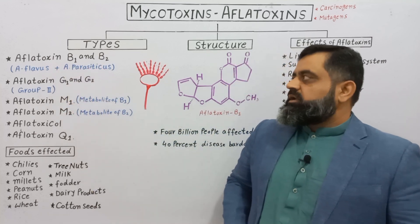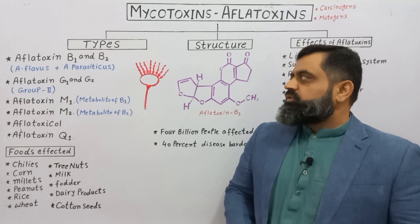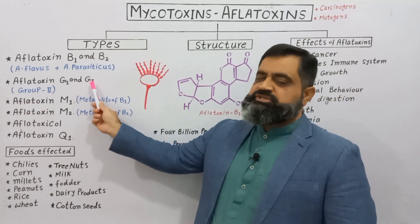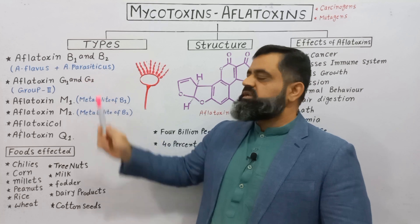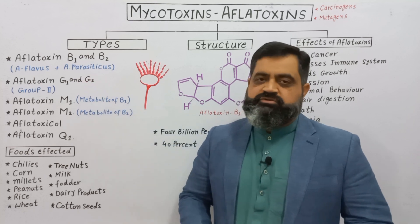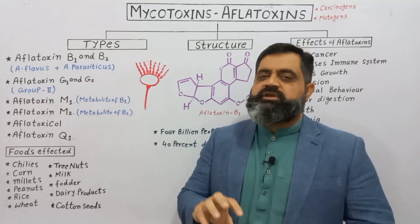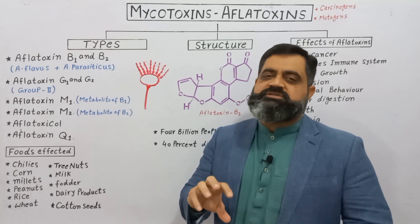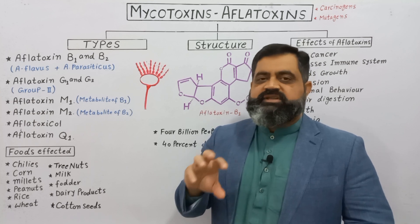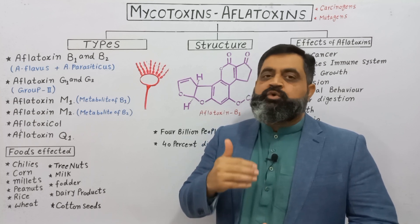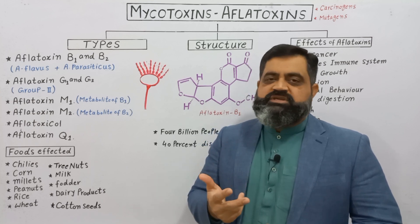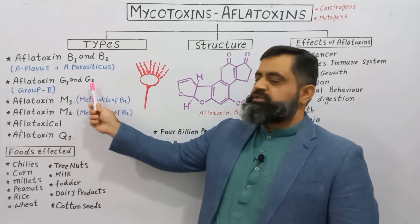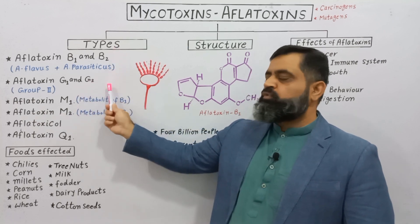The second type of aflatoxins are G1 and G2. G1 and G2 aflatoxins are also produced by Aspergillus flavus and Aspergillus parasiticus, but by a group 2 of these fungi. So B1, B2, G1, and G2 are the four major aflatoxins commonly found in our environment and foodstuffs.